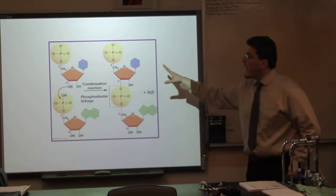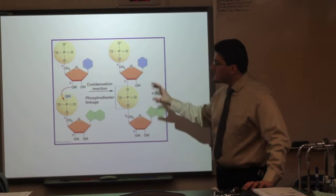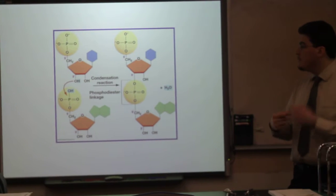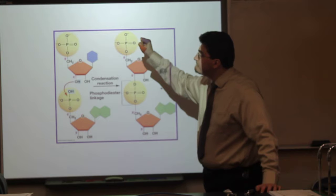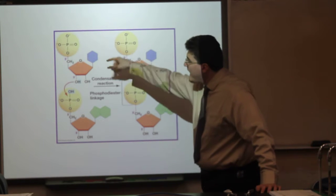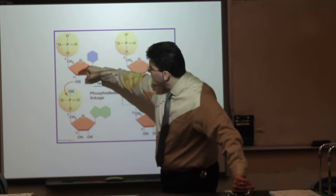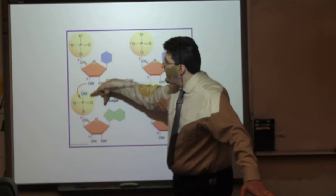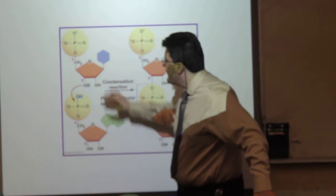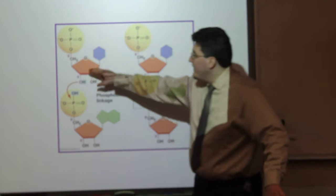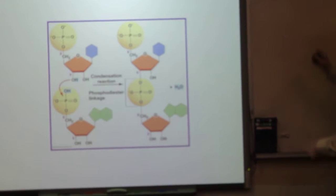Let's show how we get a phosphodiester bond. The condensation reaction is how we get our phosphodiester linkage, which is how we put together individual nucleotides. Here we have our ribose sugar — this is RNA. We have RNA and we have a 3' carbon here. The 3' hydroxyl will bond with the phosphate hydroxyl group here on the 5' group. So we have a 3' to 5' phosphodiester linkage — a C-O-P-O-C. The C-O-P-O-C is a phosphodiester linkage.